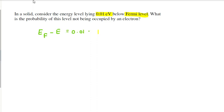What is the probability of this level not being occupied by an electron? So for electron not occupying, we need to find 1 minus F(E).